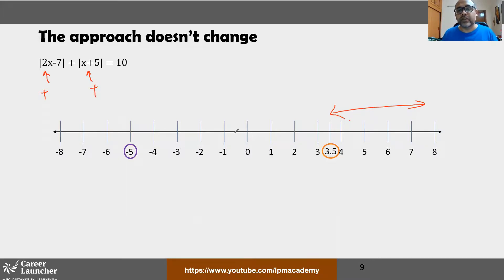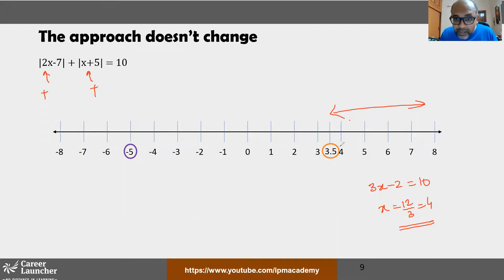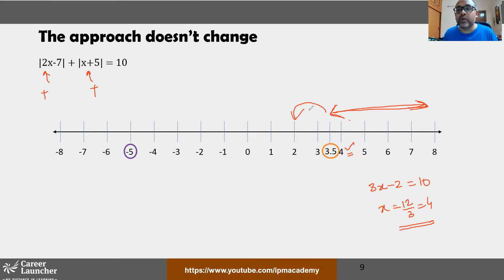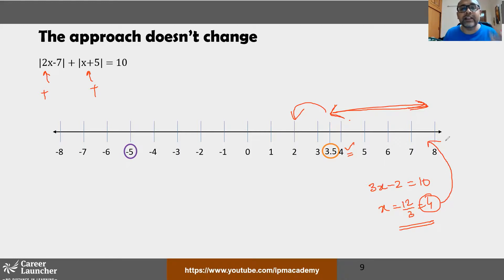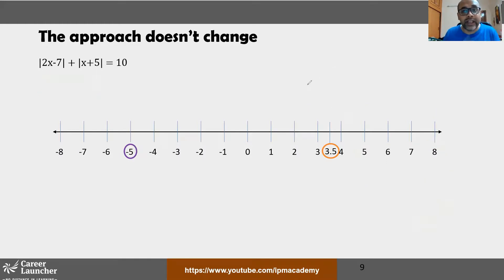In the first region (x ≥ 3.5), take x = 10: both moduli are positive. The equation becomes (2x − 7) + (x + 5) = 10, so 3x − 2 = 10, giving x = 4. Verify: 4 is indeed in the region x ≥ 3.5, so x = 4 is accepted. This matches the answer from the distance approach.